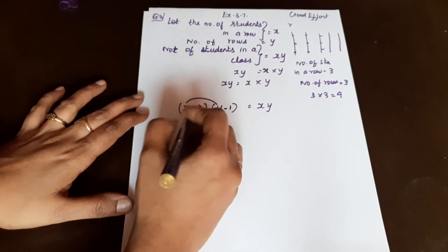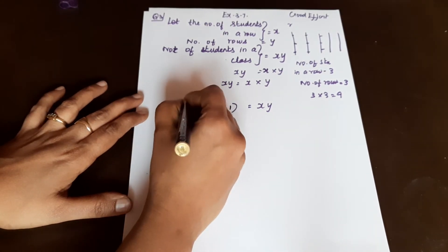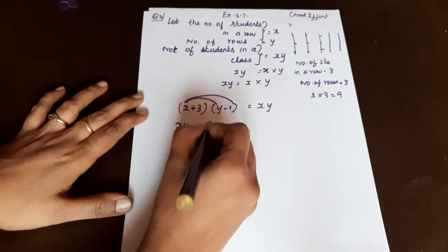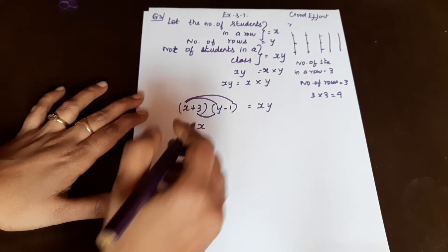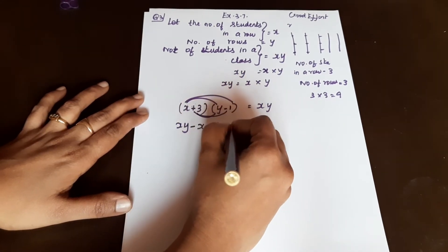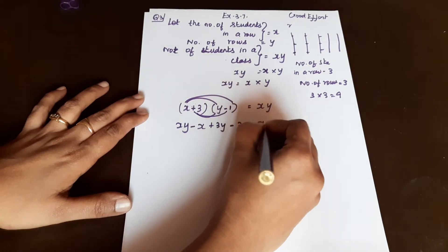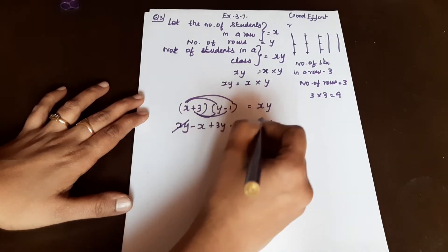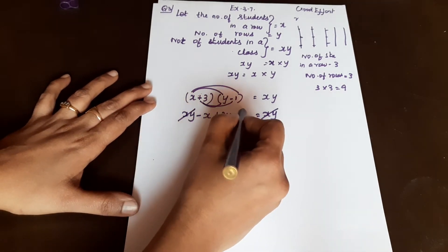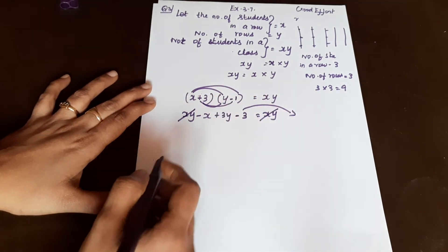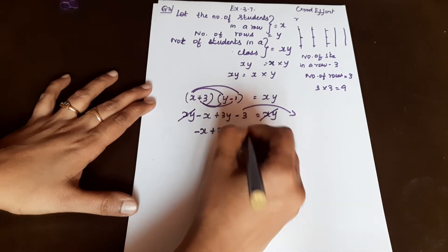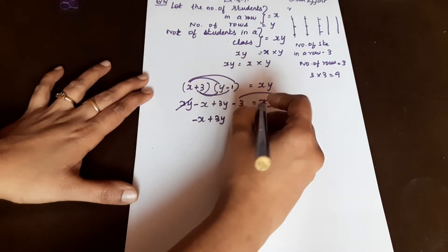So X into Y equals (X + 3)(Y − 1). Expanding: XY minus X plus 3Y minus 3 equals XY. Cancelling XY from both sides and transposing gives us: minus X plus 3Y equals 3. This is equation number 1.